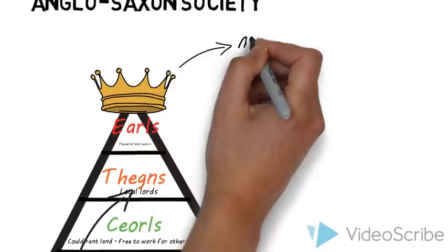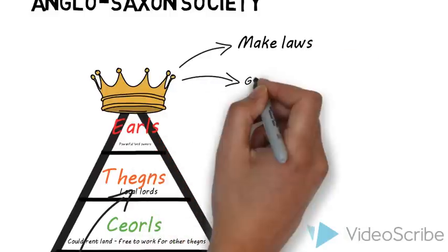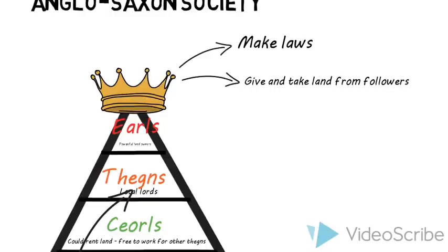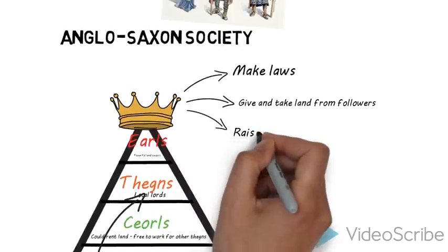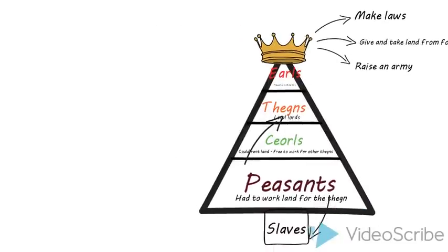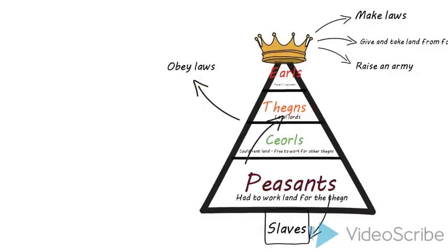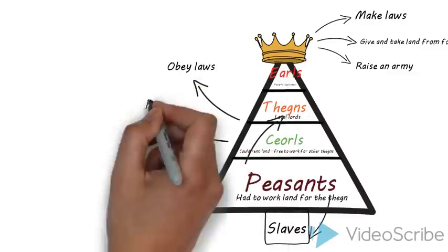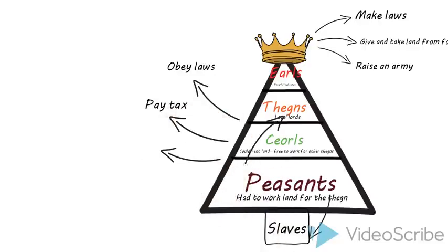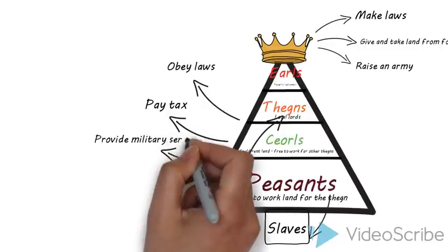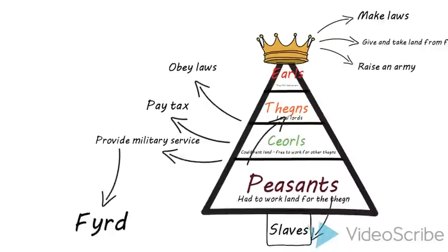The king had several responsibilities. He was expected to make laws to make sure the country functioned properly. He gave and took land from his followers, giving more land to those he liked. He was also expected to raise an army to protect the country in case of invasion. In return, the people of his kingdom were expected to obey the king's laws, pay any taxes he raised, and go and fight in the army at times of war. This provided a large, mostly untrained army called the fyrd in cases of emergency.